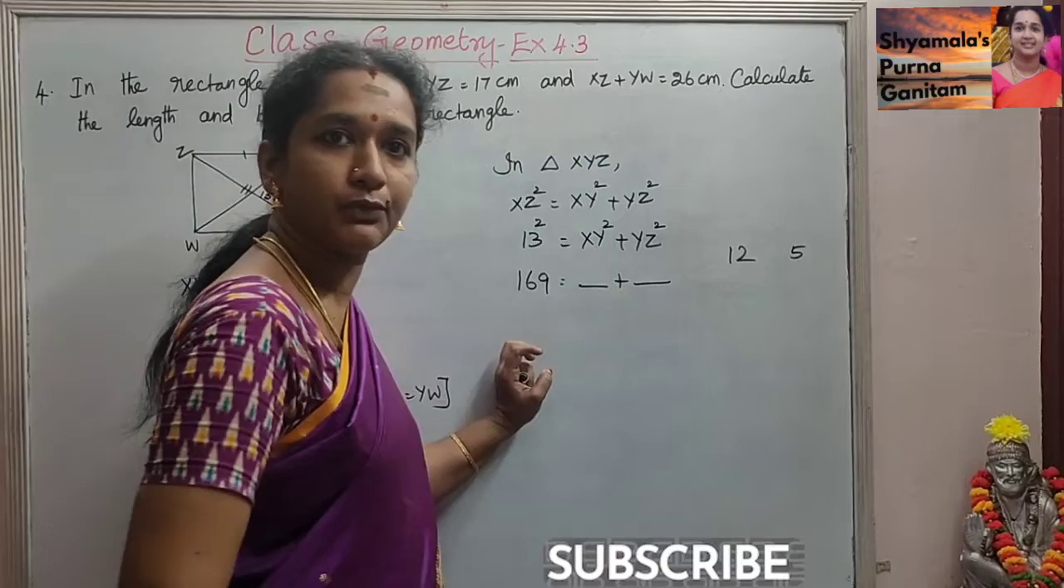So when we add this 12 and 5, we will get it as 17. So that is the thing we got it here. When we find the square of this, 12 squared plus 5 squared, 144 plus 25, we will get it as 169. So like this only we need to check. So this is 12 squared and 5 squared.